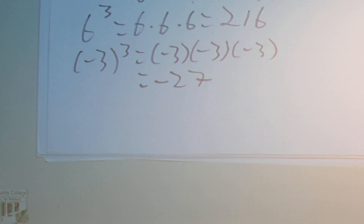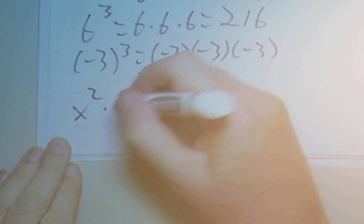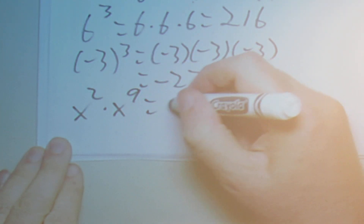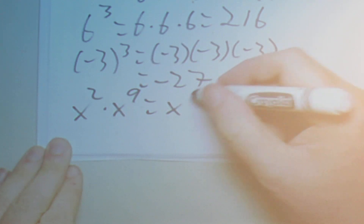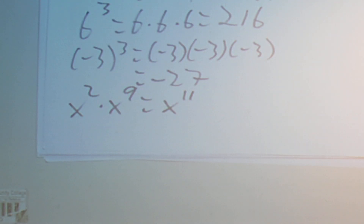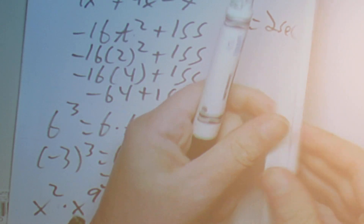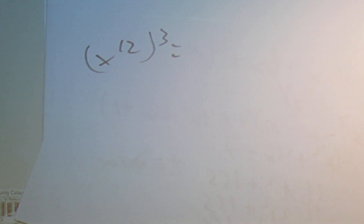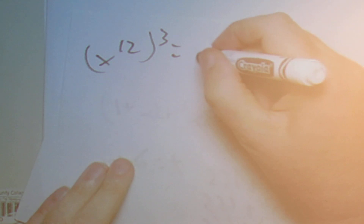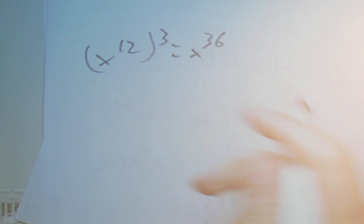Then you'll have problems using the product rule: x squared times x to the 9 equals x to the 2 plus 9, or x to the 11. Then we have the power rule: x to the 12 all raised to the 3, so we multiply our exponents — 12 times 3 is 36, giving us x to the 36.